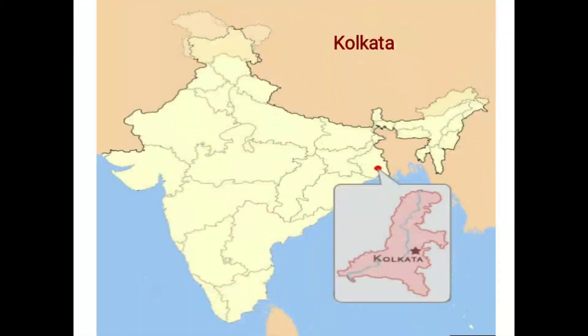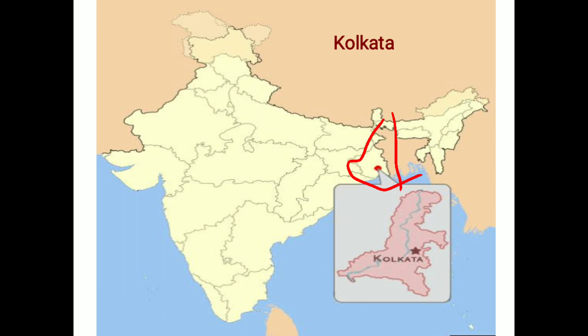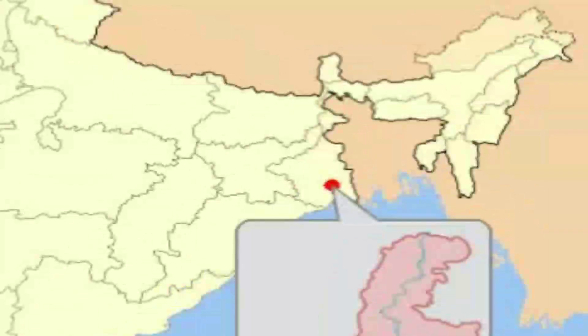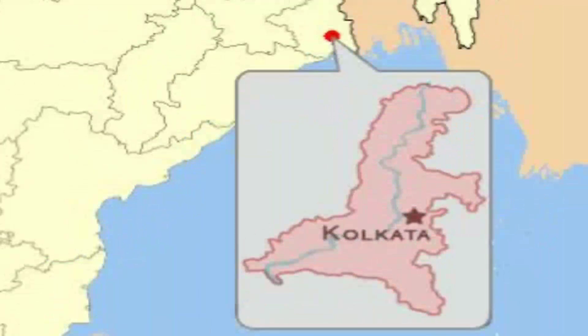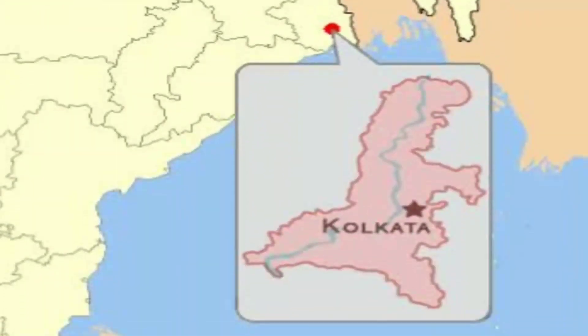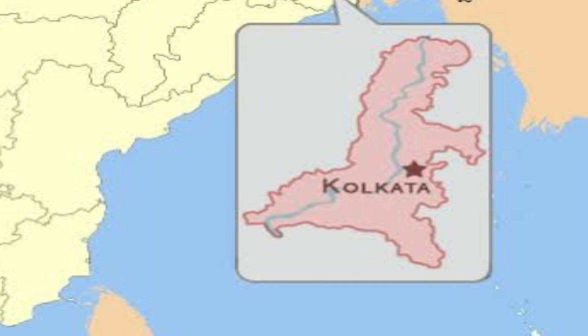Now let's come to Kolkata, the capital of West Bengal. You can see this is West Bengal, and Kolkata is located on the side of West Bengal. The city was created by the British more than 200 years ago, and since then it has remained one of the largest and most important cities.